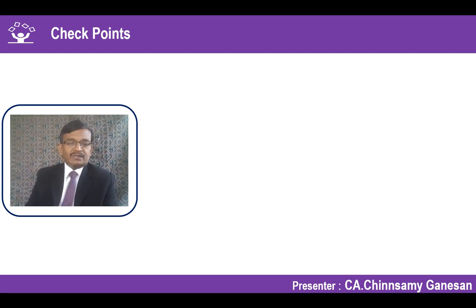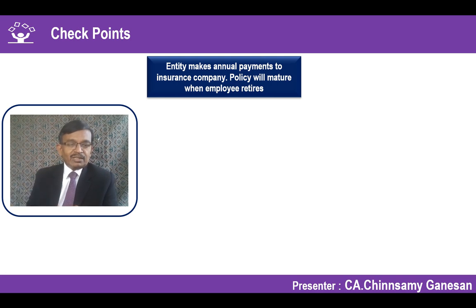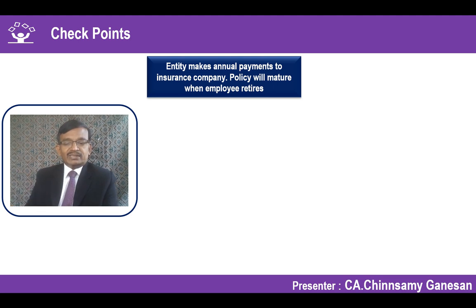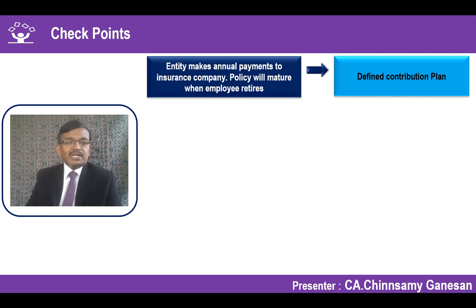Example: An entity makes annual payments to an insurance company; the policy matures when the employee retires and the employee takes the benefit from LIC. This is a defined contribution plan — the premium is predetermined and there is no further liability on the employer once the premium is paid.